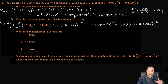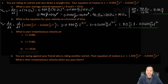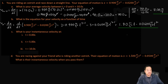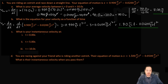Now we'll use this velocity equation to answer part C: what is your instantaneous velocity at t equals 0 seconds, 5 seconds, and 10 seconds? The first one is easy — at 0 seconds, plugging in 0 gives 0. So our velocity is equal to 0 meters per second at t equals 0 seconds.